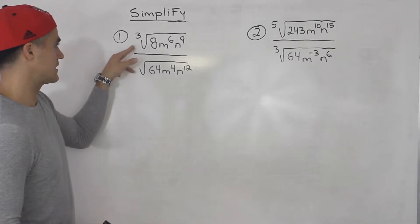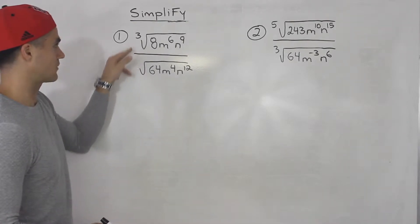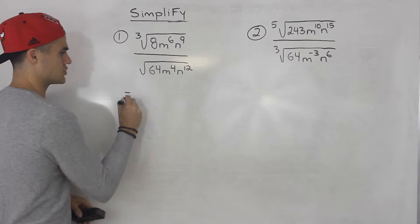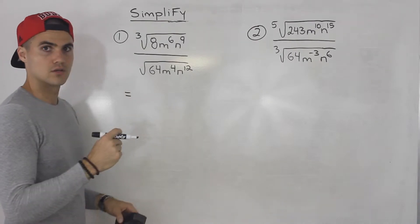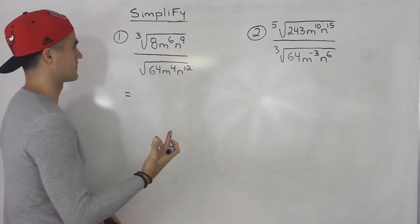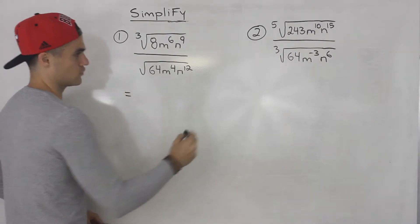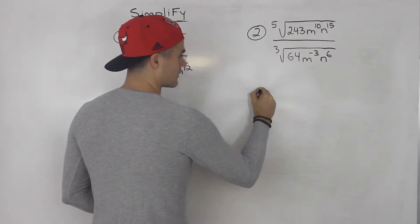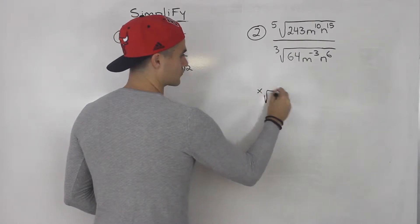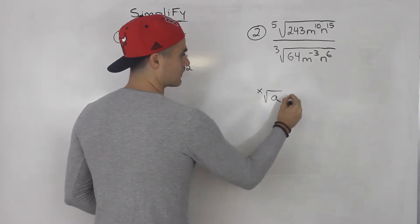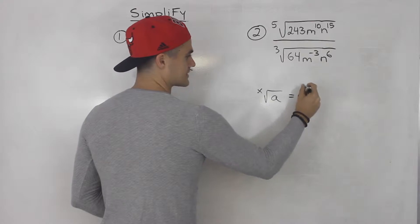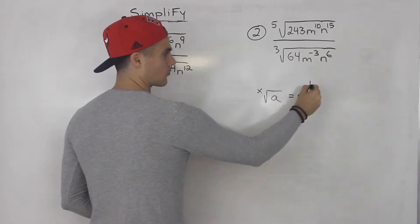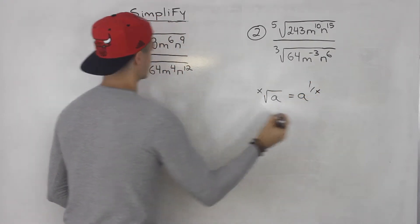Whenever I see these sort of radicals, I always like to change them to rational exponents. If you remember, if we have the xth root of something, we could change that to a to the power of 1 over x.